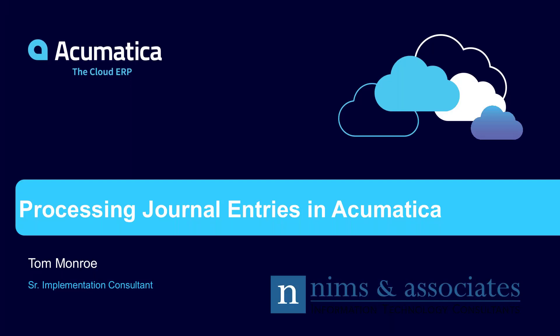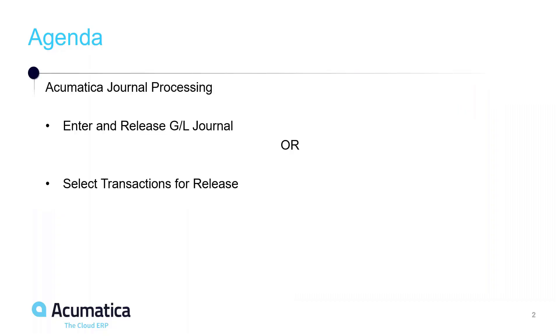Thank you very much for joining us today. Today we're going to take a look at how to do journal entries in Acumatica. Let's take a look at our agenda. We're going to talk about how to enter and release a general ledger journal, or how to select transactions for release in bulk.